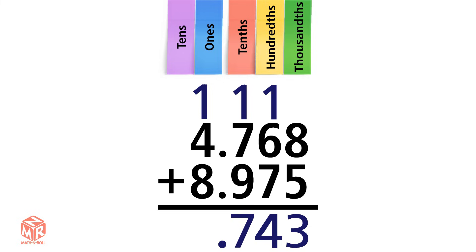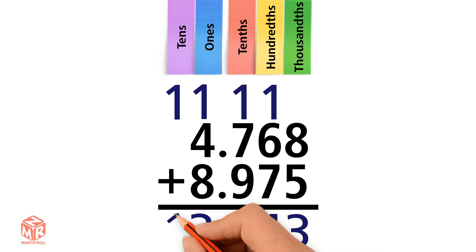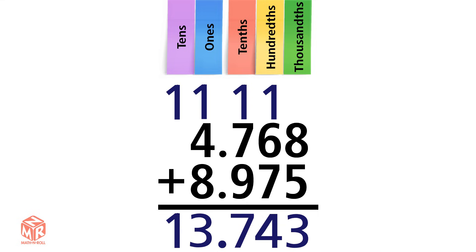1 plus 4 plus 8 equals 13. 13 is greater than 9, so we have to regroup. We're left with a 3 in the ones column and a 1 in the tens column. We only have one ten, so we bring it down. So our answer is thirteen and seven hundred forty-three thousandths.